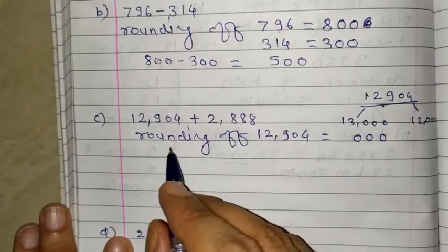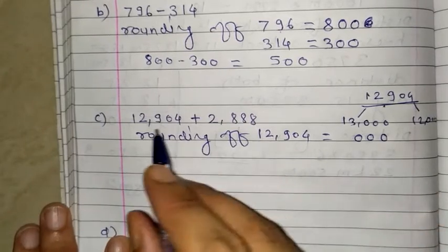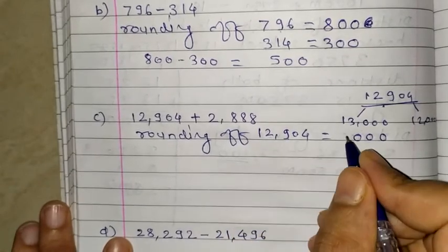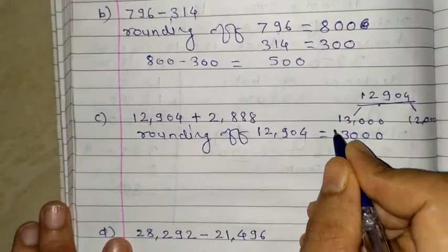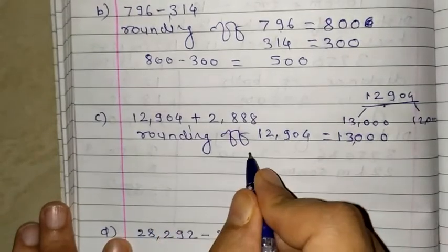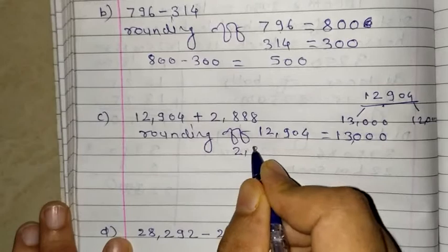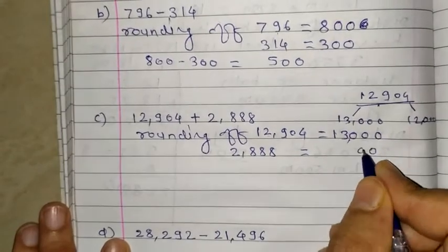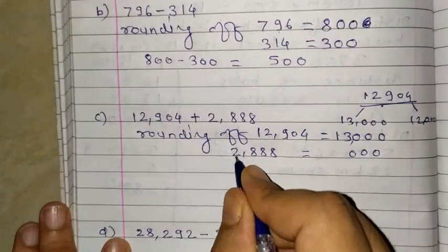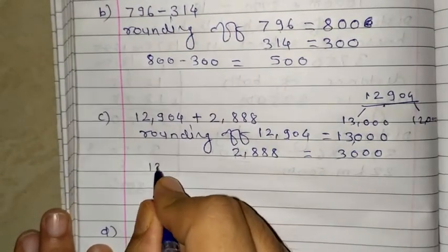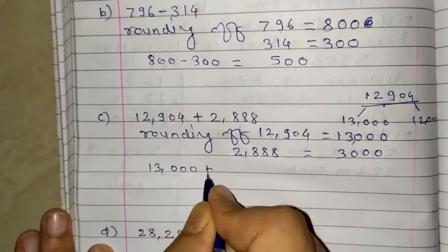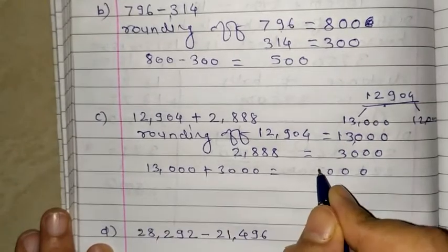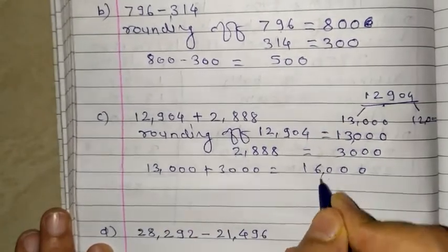You give 3 zeros because we are converting to the nearest 1000. Here 9 is there, so add 1 to the 2, so it is 13,000. Next number 2,888, this number is nothing but 3000. Give 3 zeros. Here 8 is there, so add 1, so it is 3000. So 13,000 plus 3,000, 3 plus 3 is 6 and 1 as it is, so it is 16,000.